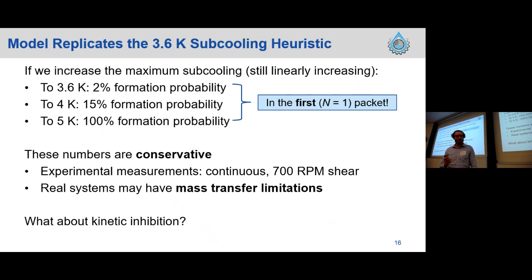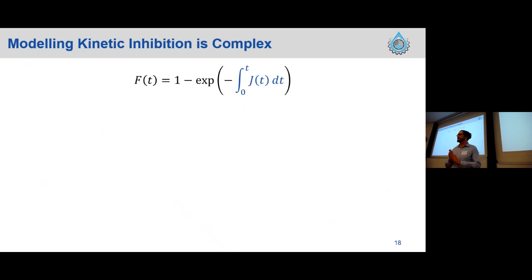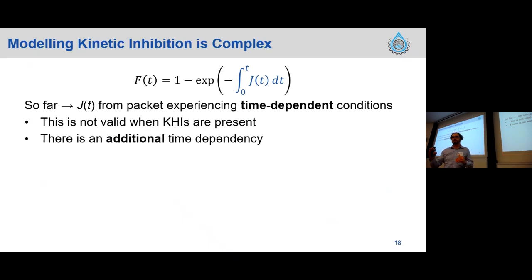The next question is: what happens when we put KHI into our system? For a kinetic hydrate inhibitor, the nucleation rate changes as a function of time even if you hold system conditions constant — there's an additional time dependency we have to account for, and we end up with another factor in our equation. In the HPS autoclave we've measured the nucleation rate as a function of time, and you can see it's increasing on a log axis. Without KHI we'd expect a flat line. So with constant subcooling and constant interfacial area, J is still changing as a function of time.